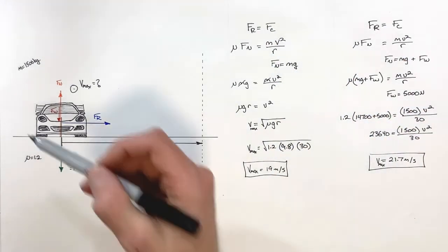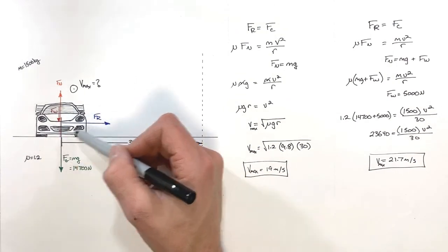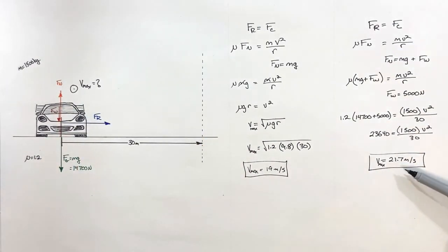Now, we threw in a wing here just to add a little bit extra downforce to this car to see how that changes the performance of the vehicle. And this is yet another example of circular motion. And on that note, that's all for now.